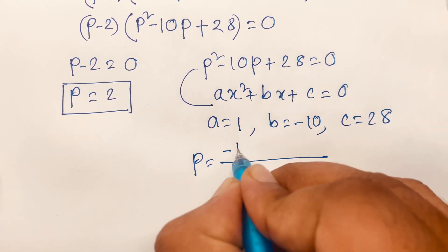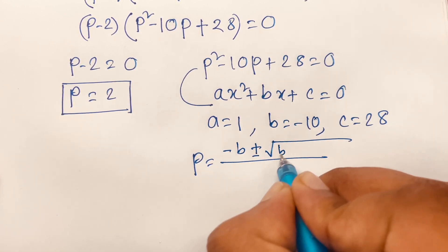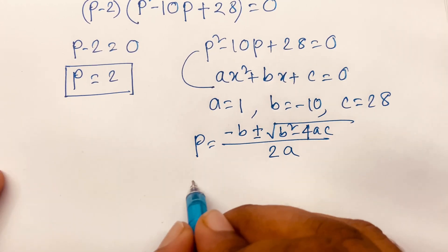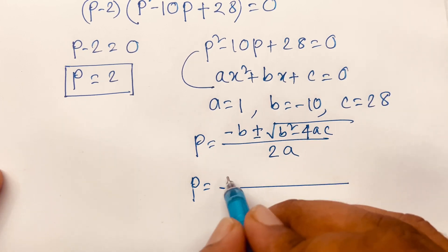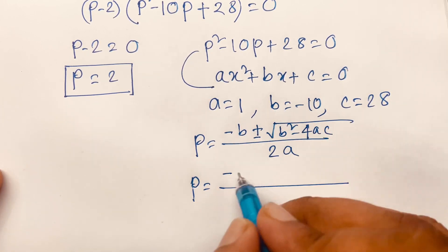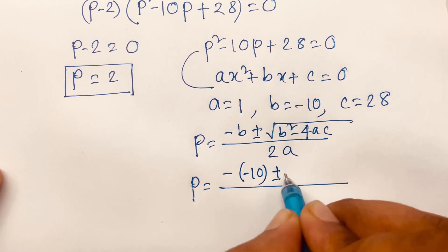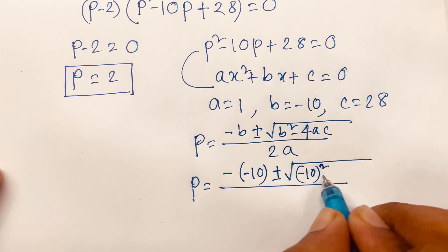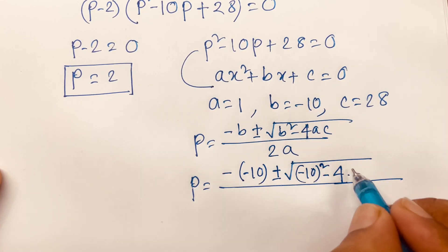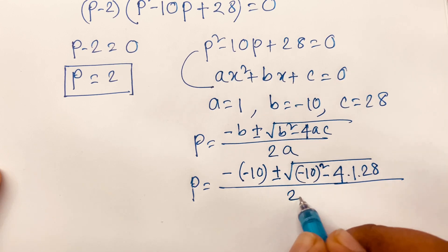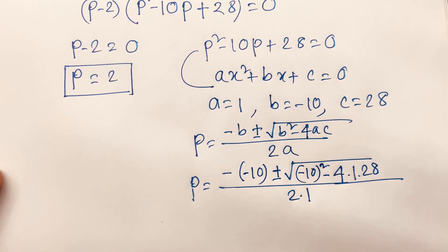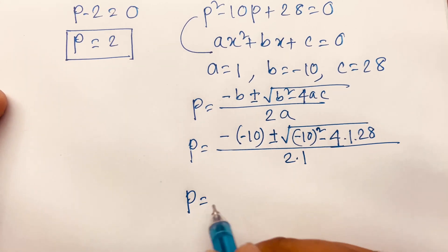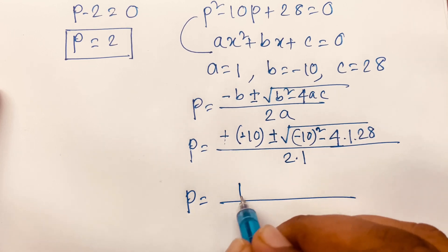Using the quadratic formula, p equals minus b plus or minus square root of (b² minus 4ac) over 2a. Substituting: p equals 10 plus or minus square root of (minus 10 squared minus 4 times 1 times 28) over 2 times 1.